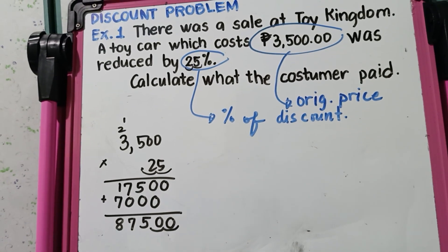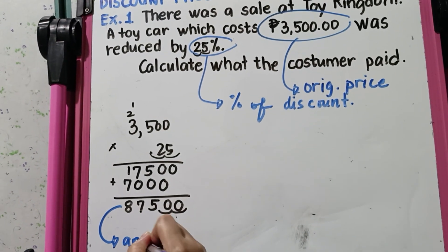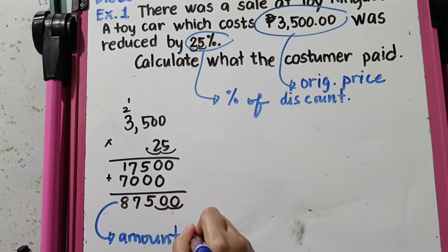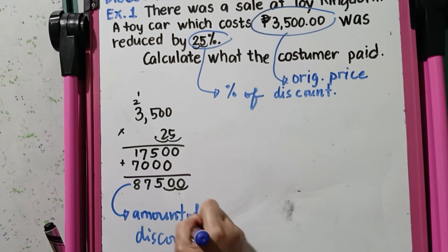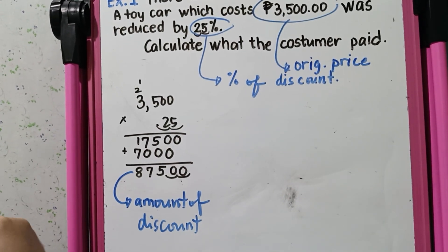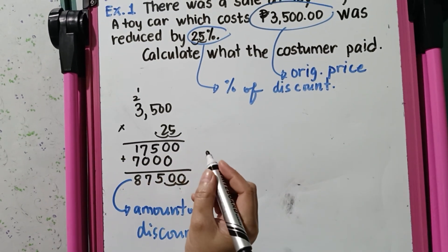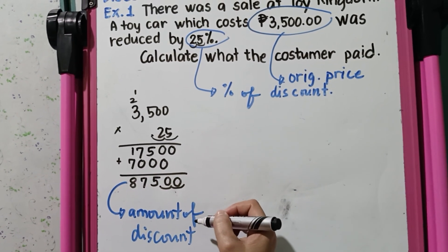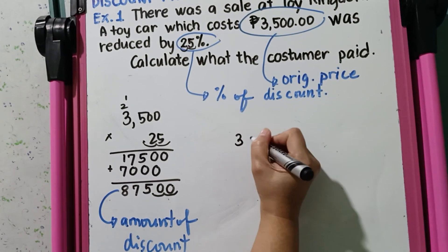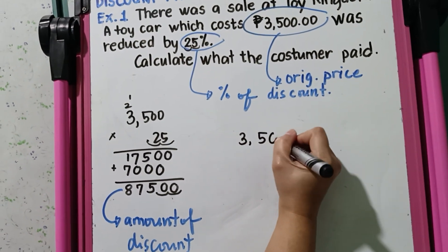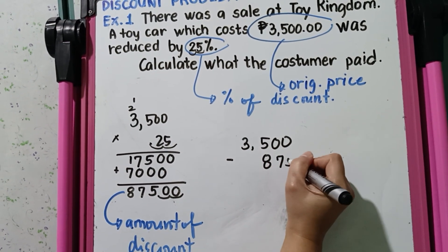So 875 is the amount of discount. To determine the amount paid by the customer, all we have to do is subtract the amount of discount from the original price of the item. That is 3,500 minus 875.